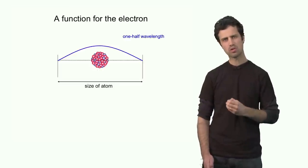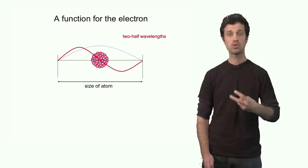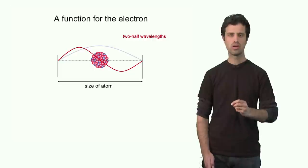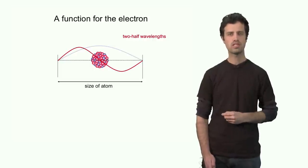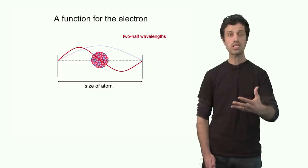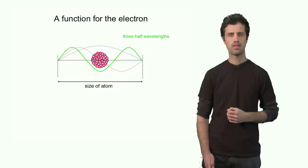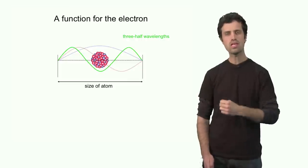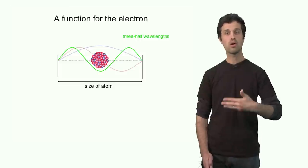Now the next solution looks like this. It also looks like a wave. It looks like two half wavelengths. This function, too, is zero at the edges as required and is smooth and continuous. The next allowed solution also looks like a wave. In this case, I find three half wavelengths. And so forth. We can go on and on.